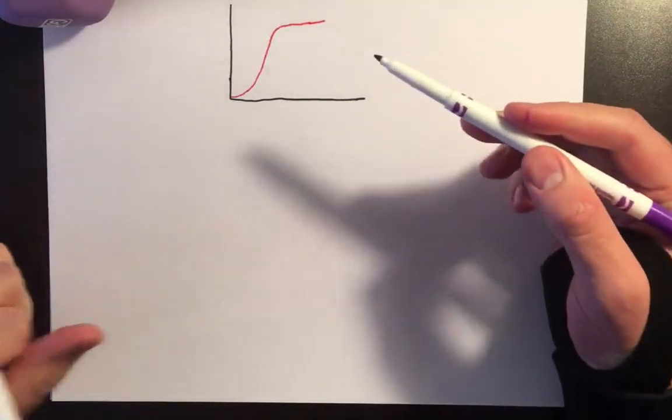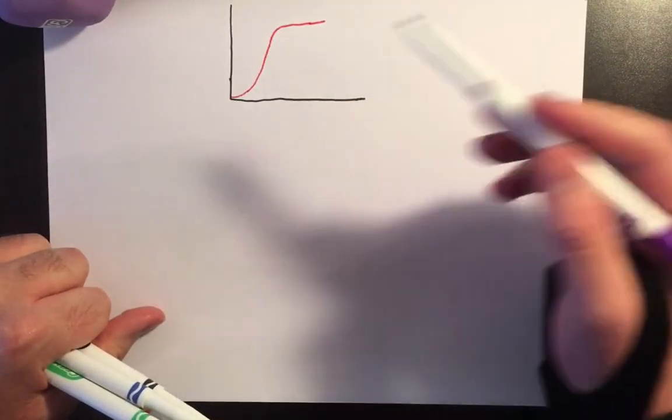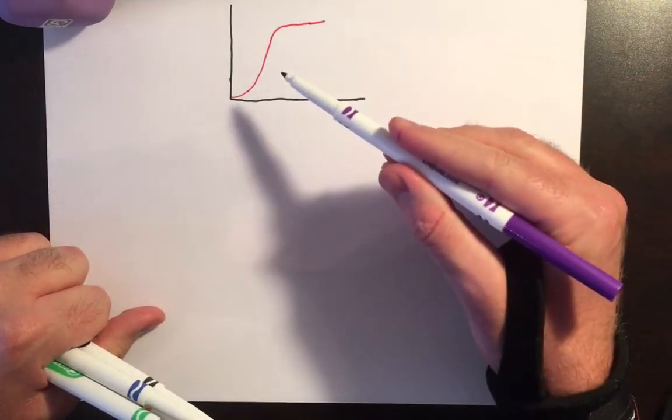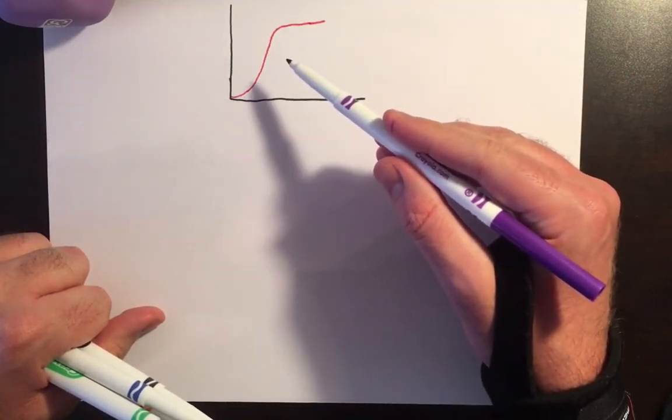Anytime some type of adaptive system is performing any type of function, you end up seeing this graph, this sigmoidal shaped curve.